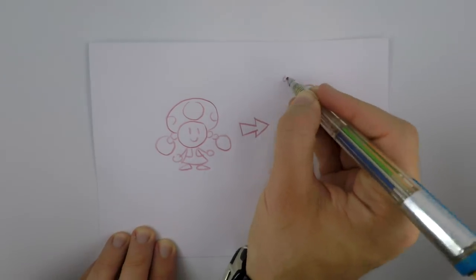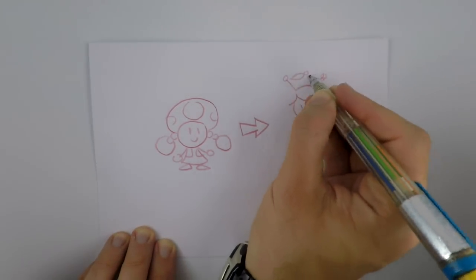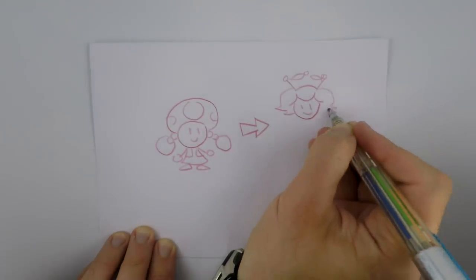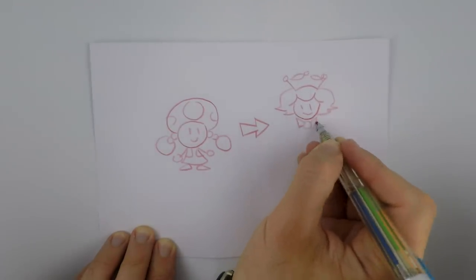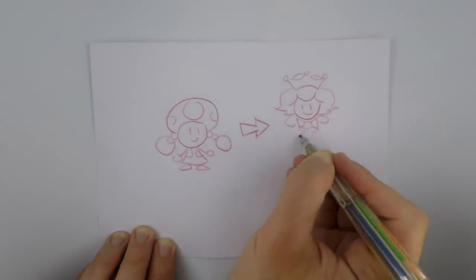Even more interesting has been the question of what happens if other characters, specifically Bowser, were to grab the power-up. Hence Bowsette, the internet's latest and greatest obsession.